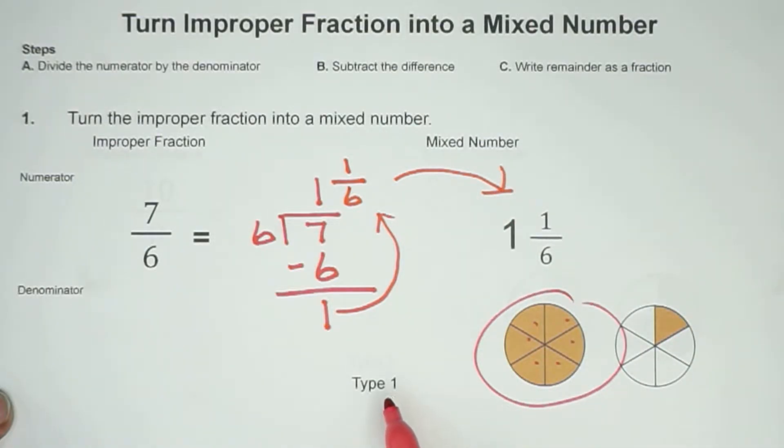I call this a type 1. That's just my term, where you have a one whole here and a fraction. Type 2 will be just a little bit different.